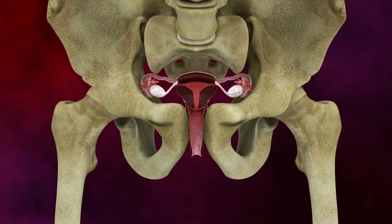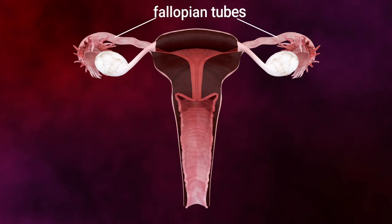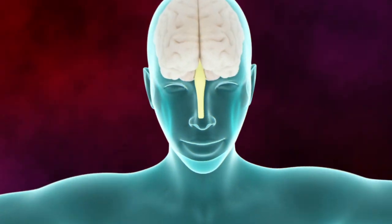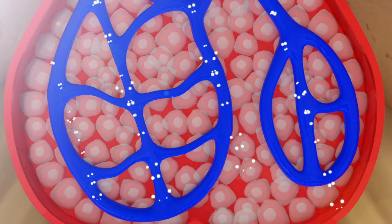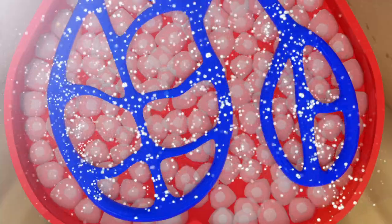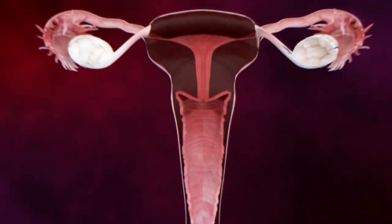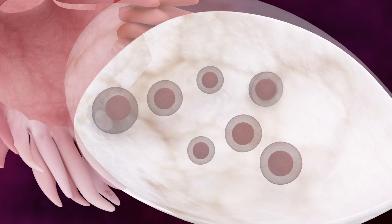Your reproductive system includes the ovaries, fallopian tubes, uterus, and vagina. First, the pituitary gland in your brain releases a hormone called FSH into your bloodstream. This hormone reaches the ovaries making an egg mature.